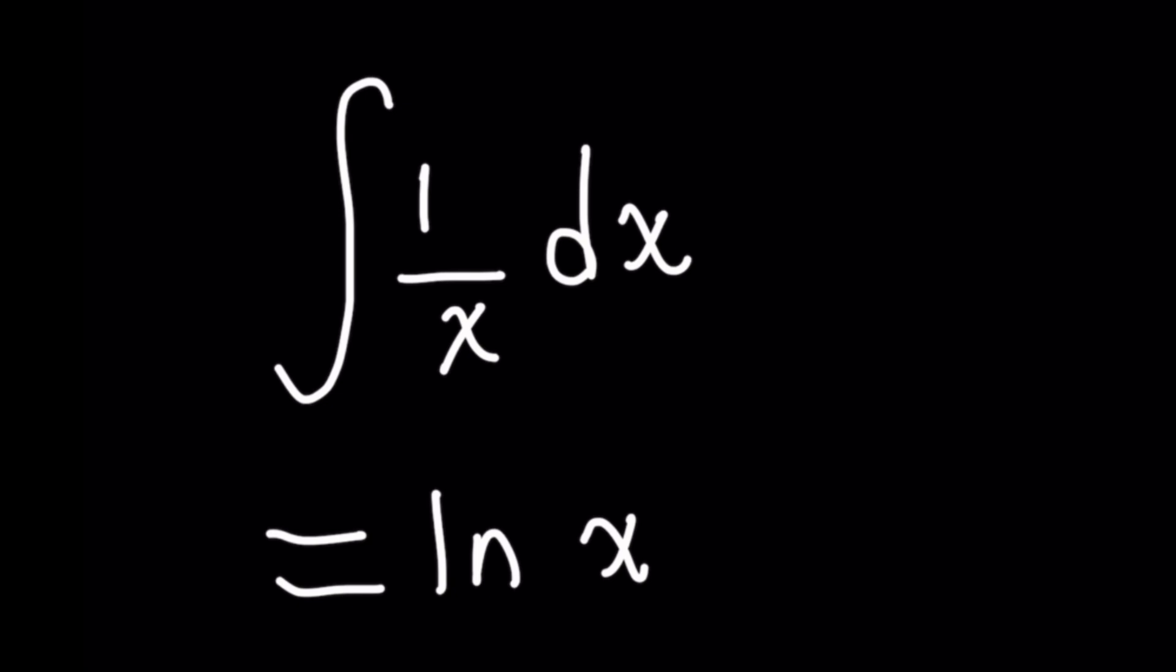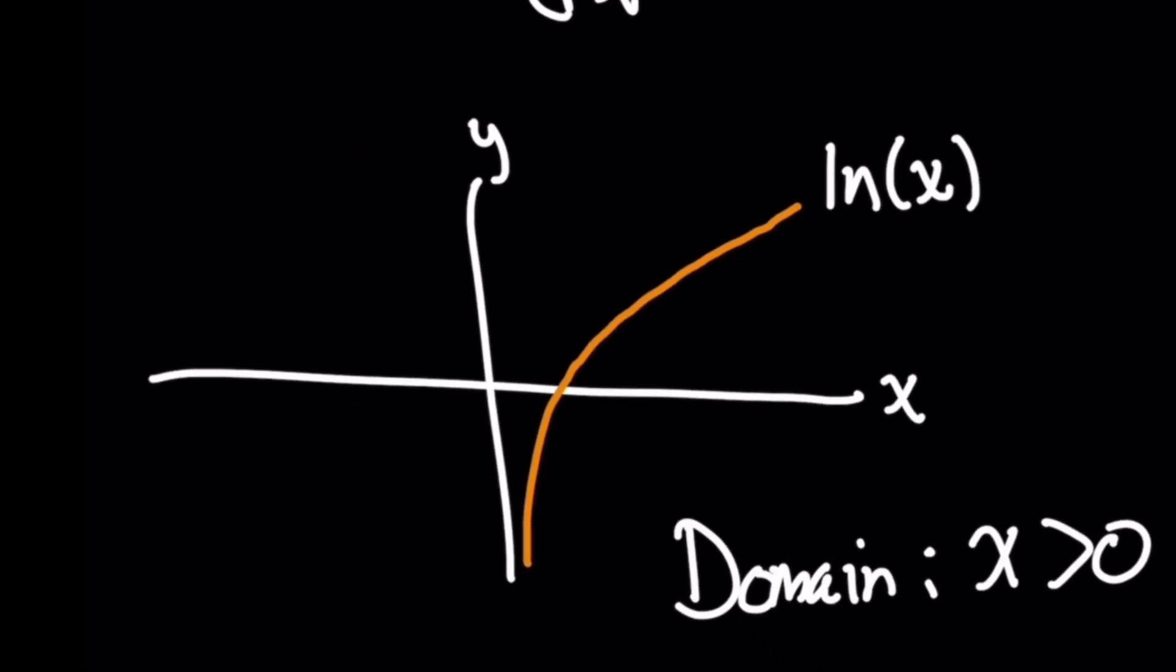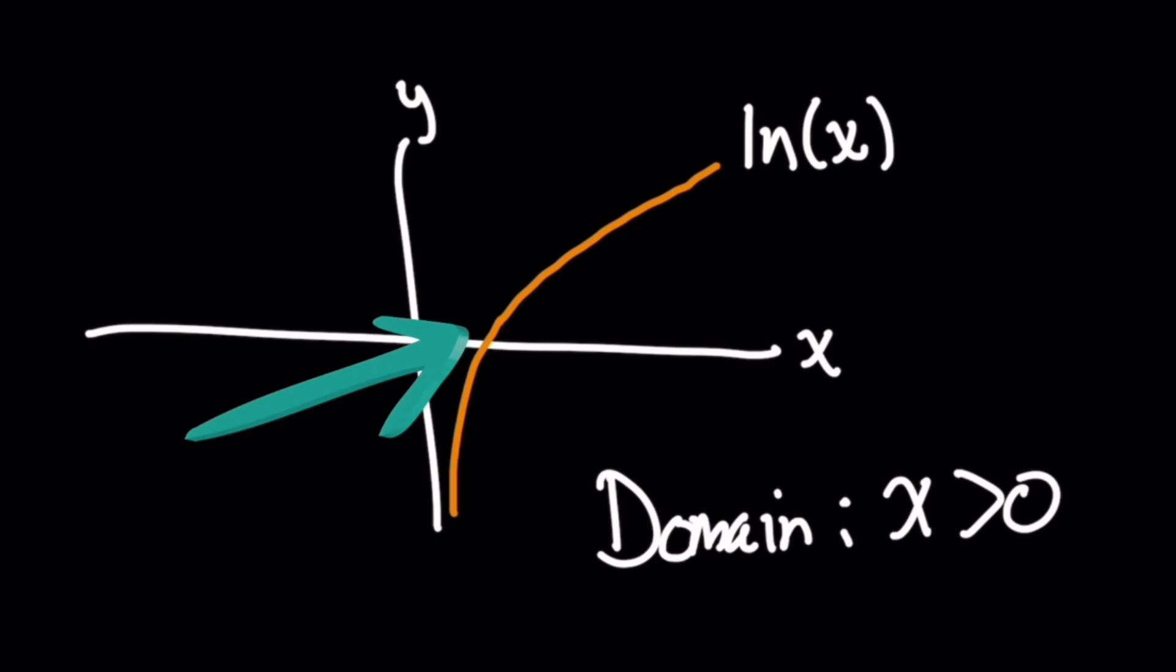The way I want to explain this to you is graphically. Do you remember that when you graph the natural log function, it looks like this orange curve? What do you notice about the domain? And by the way, if you forgot what a domain is, be sure to also check out this other video I've put up on my channel as well to get a refresher.